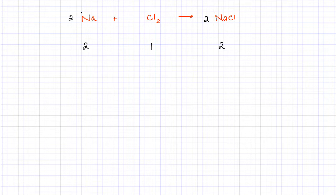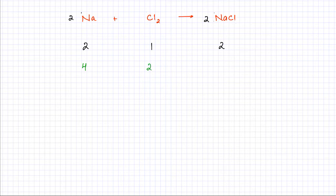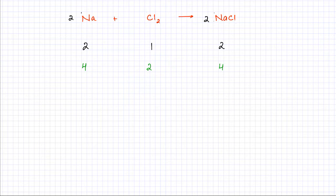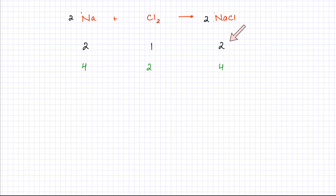If I change something — if I have 4 sodium atoms — according to the ratio, 2 sodium atoms require 1 molecule of Cl₂, so if I have 4 sodium atoms, I would need 2 molecules of Cl₂. And again, I can use ratios: 1 Cl₂ produces 2 NaCl, so if I have 2 Cl₂, they should produce 4 NaCl. Remember that an equation tells you the simplest ratio in which reactants are reacting and products are being produced.